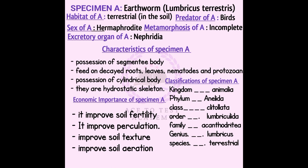Moving to specimen A, which is the earthworm. The botanical name is Lumbricus terrestris. The habitat is terrestrial as it lives in soil. The predator is birds. The sex of A is hermaphrodite. The metamorphosis is incomplete. The excretory organ of A is nephridia. Characteristics include possession of a segmented body; it feeds on carrots, leaves, menthol, and protozoans; possession of a slimy body; and it has a hydrostatic skeleton.